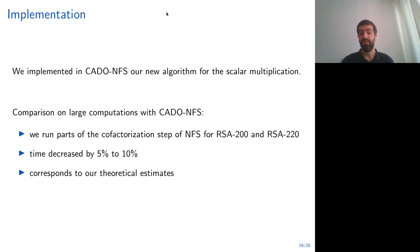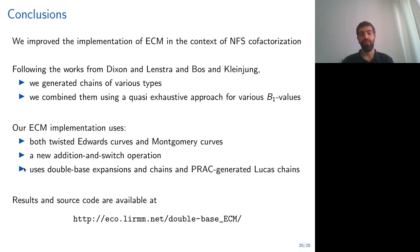We then implemented our method in CADO-NFS and we reran some parts of the cofactorization step for RSA 200 and RSA 220. And we observe that with our algorithm for the scalar multiplication in ECM for the cofactorization step, the time decreased by 5 to 10 percent, which corresponds to what we estimate from our theoretical results.